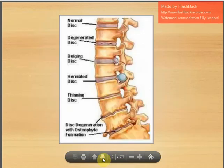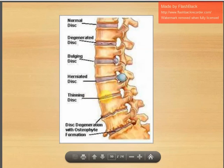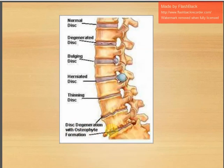This picture shows degenerative changes: the normal disc, a degenerative disc, a bulging disc where the bulge is visible, a herniated disc where herniation is impinging structures, a thinned disc due to aging and loss of hydration, and degeneration with osteophyte formation — where bony margins are irregular with bony spurs.